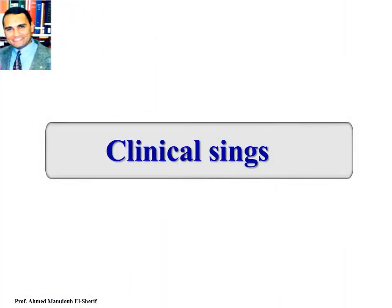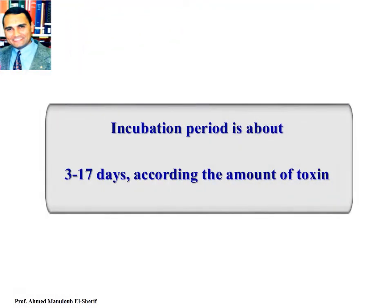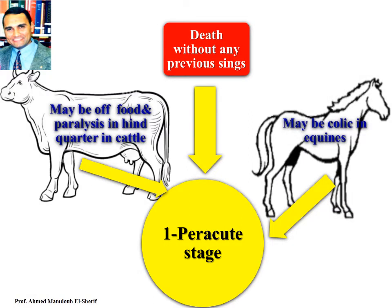Clinical signs: The incubation period of botulism is about 3 to 17 days according to the amount of toxin produced. In the per-acute stage, in cattle and sheep, atony of food and paralysis in the hind quarters may be seen, while in equines there is colic. Usually death occurs in all animals with botulism without any previous signs or warning.